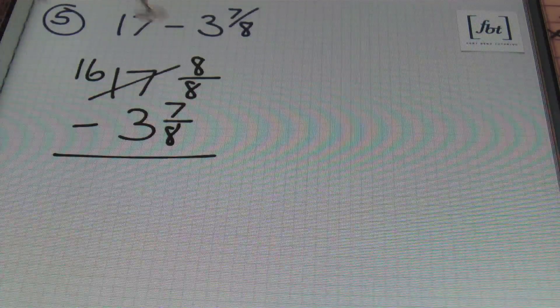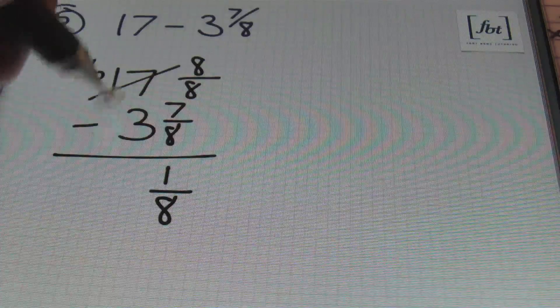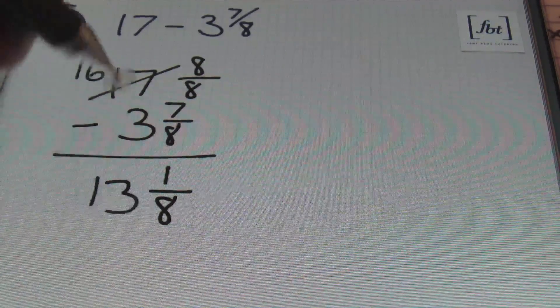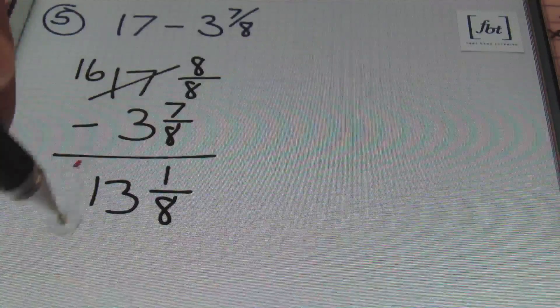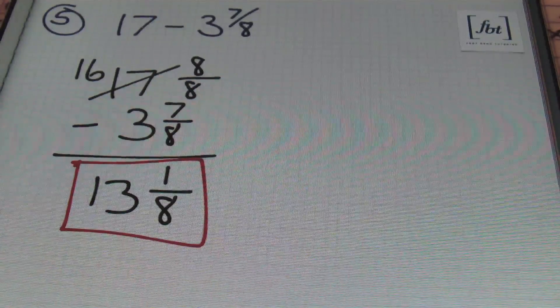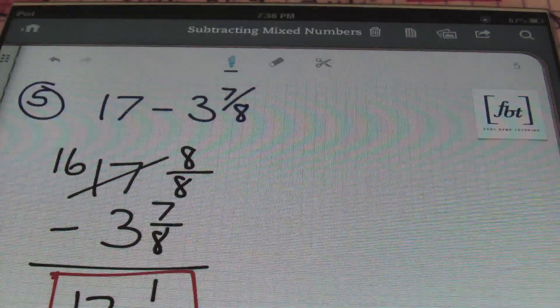From there, we'll go ahead and subtract. So I have 8 minus 7, which is 1, over my common denominator of 8. And then 16 minus 3 leaves me a result of 13 and 1 eighth. And that's my answer, ladies and gentlemen. Done and done. That completes today's lesson on subtracting mixed numbers.